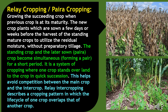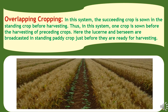Now we will study about relay cropping or para cropping — growing the succeeding crop when the previous crop is at its maturity. The new crop plants which are sown a few days or weeks before the harvest of the standing mature crop, to utilize the residual moisture without preparatory tillage. The standing crop and the later-sown para crops become simultaneous, forming a pair for a short period. It is a system of cropping where one crop stands over land to the crop in quick succession. This helps avoid competition between the main crop and the intercrop. Relay intercropping describes a cropping pattern in which the life cycle of one crop overlaps that of another crop. In overlapping cropping, the succeeding crop is sown in the standing crop before harvesting. Lucerne and berseem are examples which are broadcasted in standing paddy crop just before they are ready for harvesting.